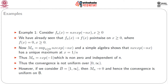Consider the sequence n·x·e^(−nx) for x ≥ 0. We have seen that f_n(x) converges to 0 for x ≥ 0. Using the M_n criterion: M_n is the supremum of n·x·e^(−nx) over x ≥ 0. A simple algebra shows that n·x·e^(−nx) has a unique maximum at x = 1/n, so M_n = e^(−1), which is nonzero and independent of n. Thus the convergence is not uniform over [0, ∞). However, if we consider the subset [1, ∞), M_n tends to 0 and hence the convergence is uniform there.